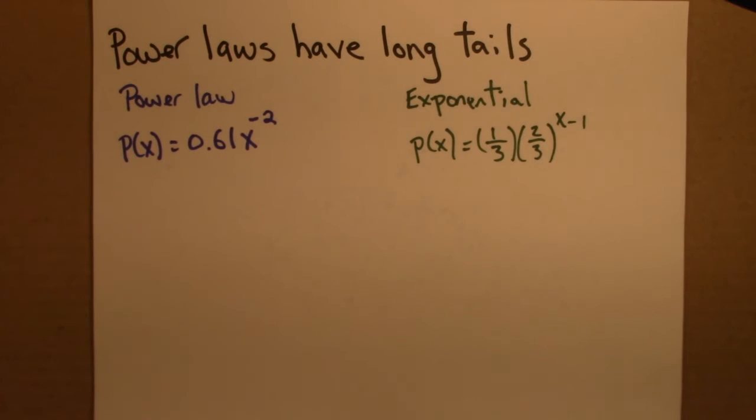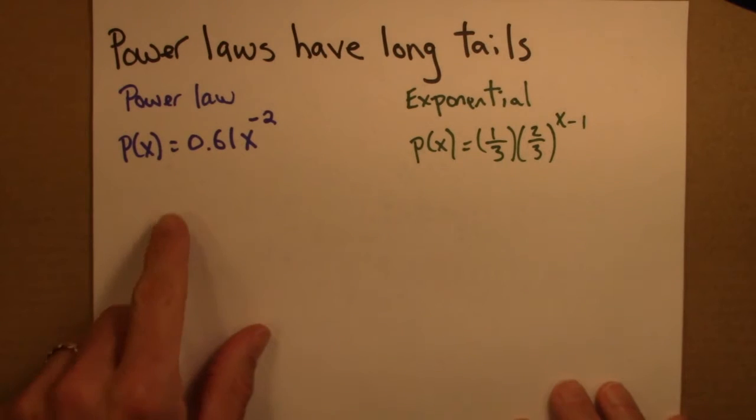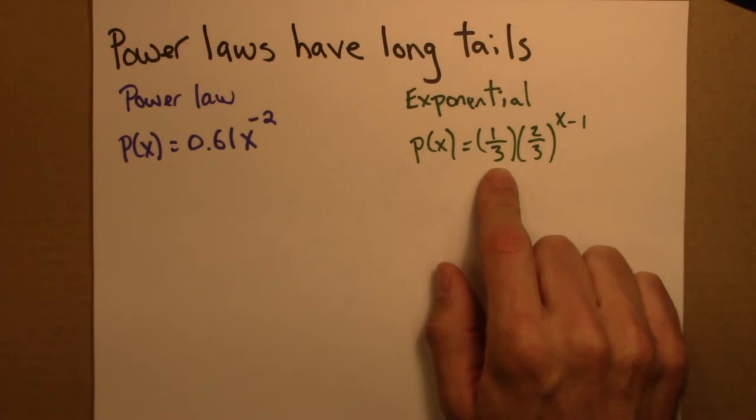So power law distributions are scale-free or self-similar. Another important feature of power laws is that they have long tails. And I'll illustrate this by again comparing power laws and exponentials.